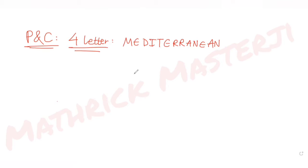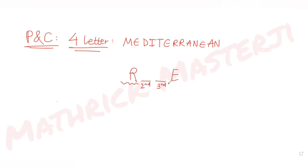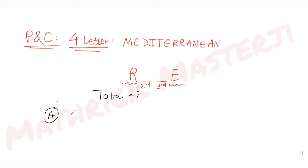The question asks us to form a four-letter word where the first letter is R and the fourth letter is E. The middle two letters — the second and the third — can be anything. So we have to form four-letter words such that the first letter is R and the last letter is E, and we need to find how many total such words can be formed.